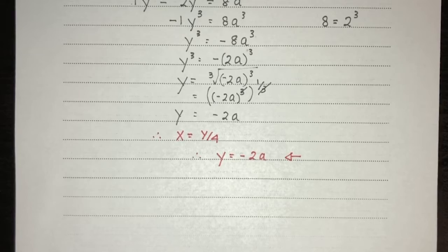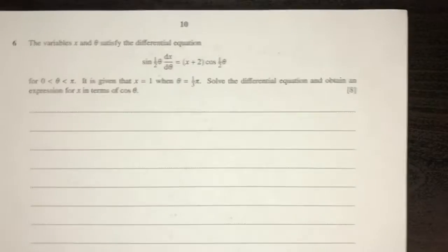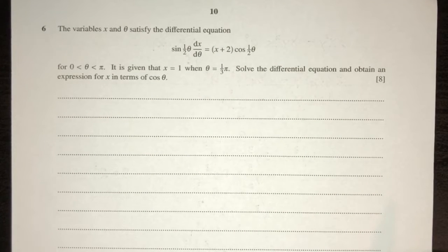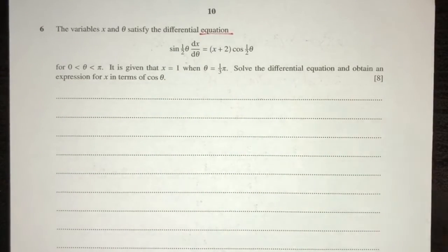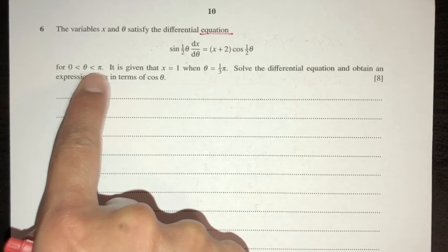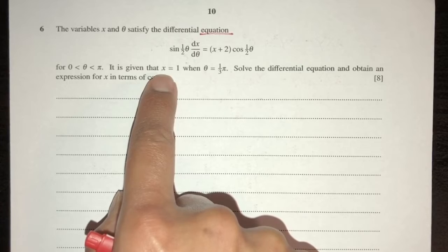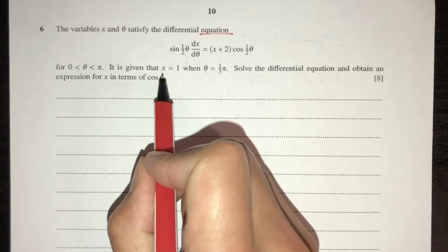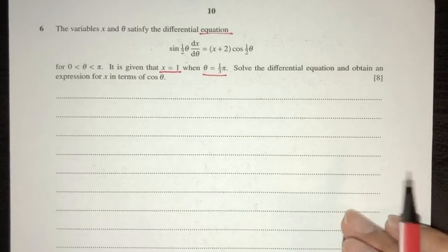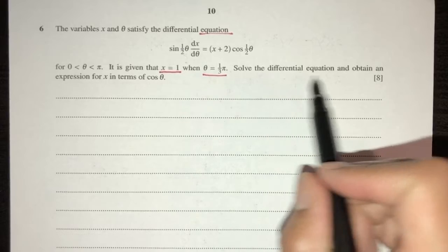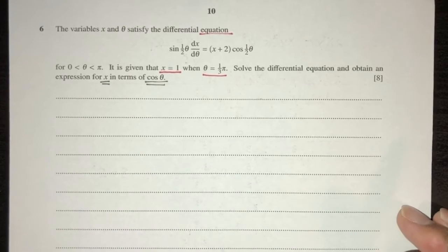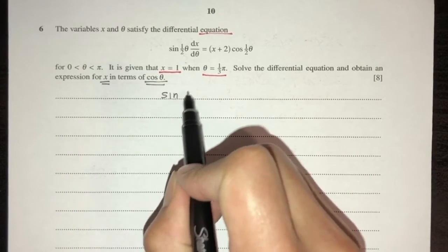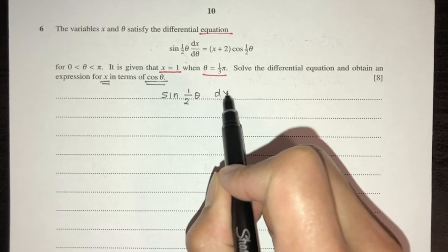Question six: variables x and θ satisfy a differential equation with θ between 0 and π. Given x = 1 when θ = π/3, we need to obtain an expression for x in terms of cos(θ). We separate variables: dx/(x+2) on the left and cos(θ/2)/sin(θ/2)·dθ on the right, then integrate both sides.